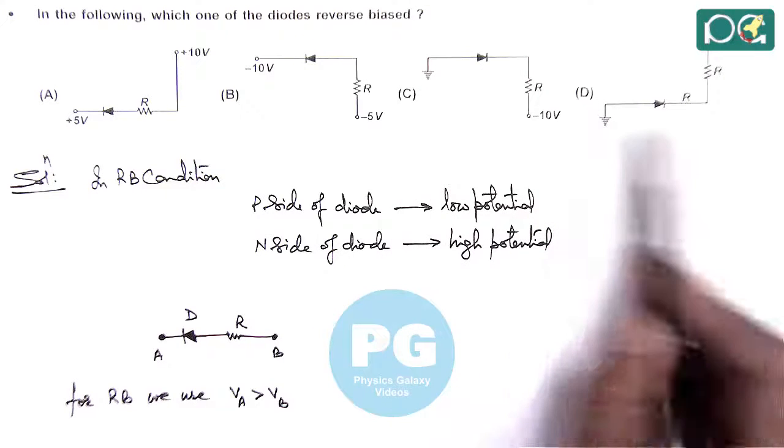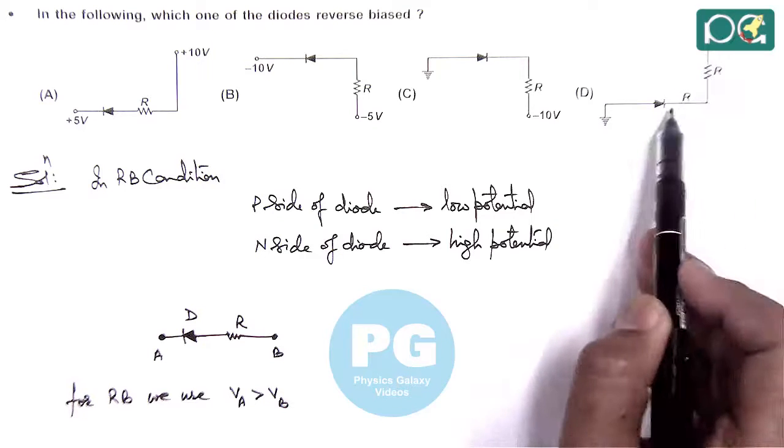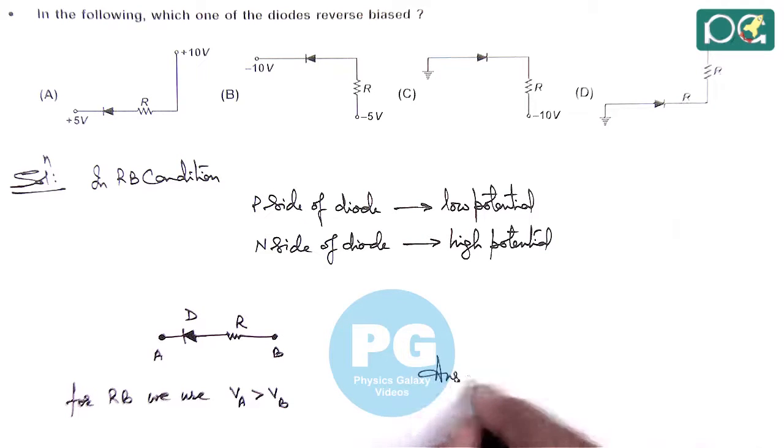In option D, the P side is at 0 and the N side is at plus 5. So here, the N side potential is higher than the P side. We can directly choose the answer as option D.